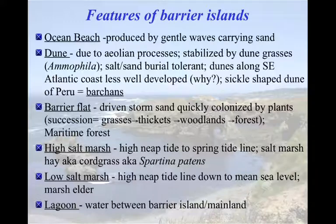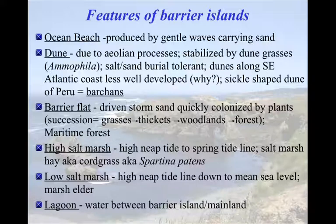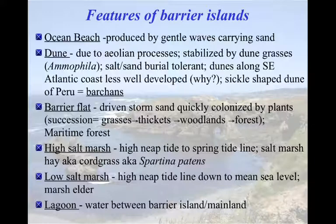Looking at a cross-section of a barrier island starting from the beach side: you have an ocean beach on one side, then dunes — well-developed on this coast but less so along the southeast Atlantic coast, due to wave approach direction. Continuing toward the bay, you'll cross a barrier flat, also called the holly forest locally, transitioning from grasses to shrubs like poison ivy and cedar, then into a true forest.